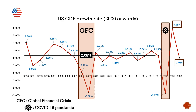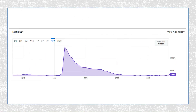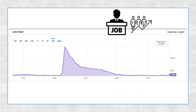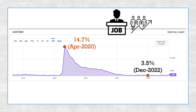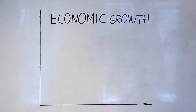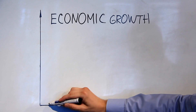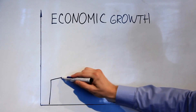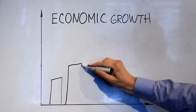With this strong recovery, the employment picture also improved substantially. The US unemployment rate plummeted from a peak of 14.7% in April 2020 to a multi-year low of 3.5% by the end of 2022. Clearly, the US economy with a robust growth rate and a strong labor market is doing quite well.